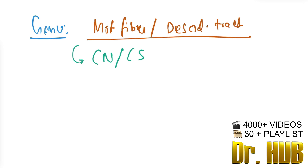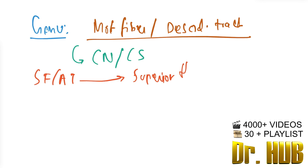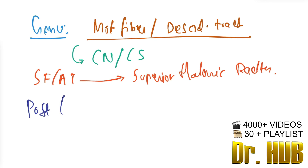Looking at the sensory fibers and ascending tracts of the genu, there is the superior thalamic radiation.